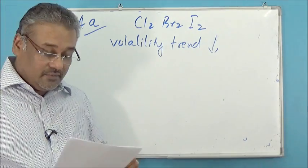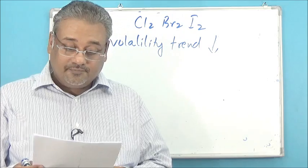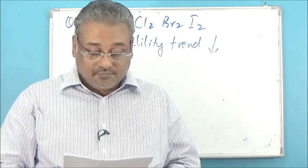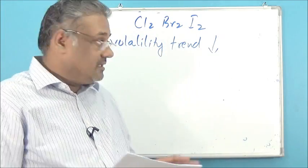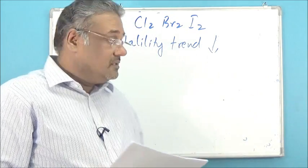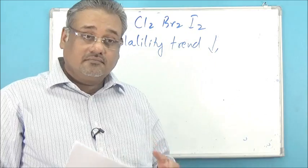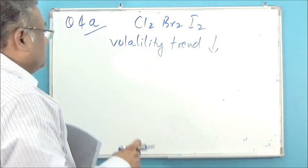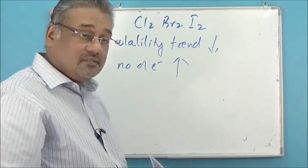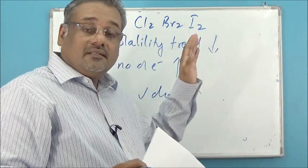Question 4a asks about the trend in volatility of halogens - chlorine, bromine, and iodine - going down the group. Volatility is the tendency for liquids to change into gas, so you need to discuss intermolecular forces. Chlorine, bromine, and iodine are all simple molecules with weak van der Waals forces between them. These forces are controlled by the number of electrons and surface area. Moving from chlorine to iodine, the number of electrons increases and the molecules become bigger, so van der Waals forces increase and volatility decreases.